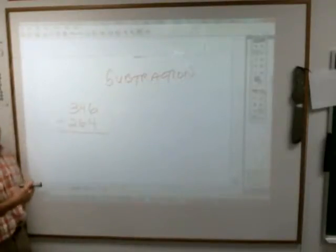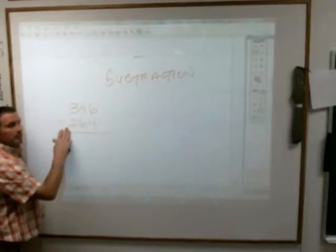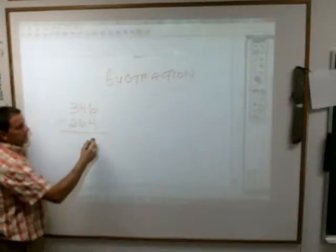The algorithm we use is we always start on the right side and work our way backwards. So life is good because you can take four away from six. That's two.